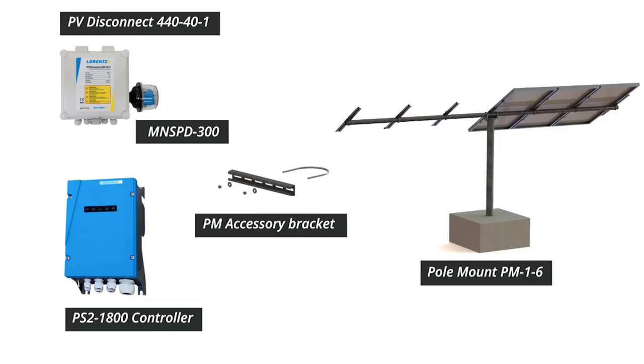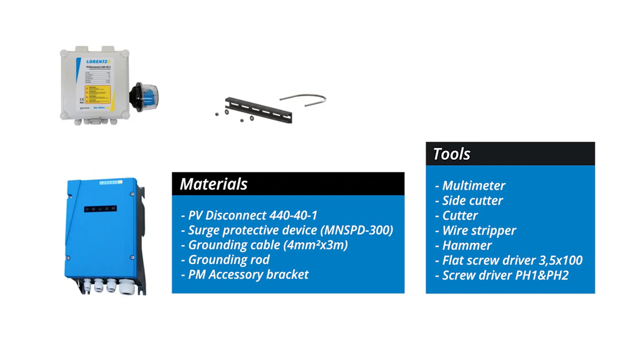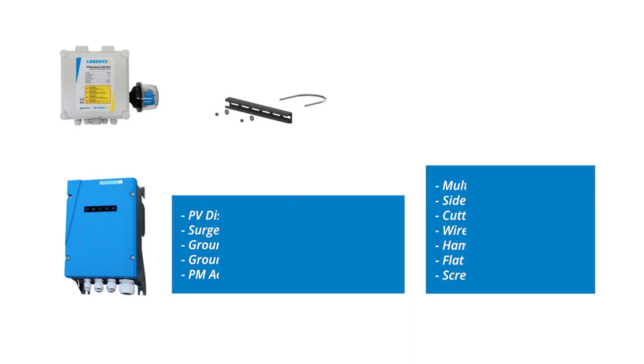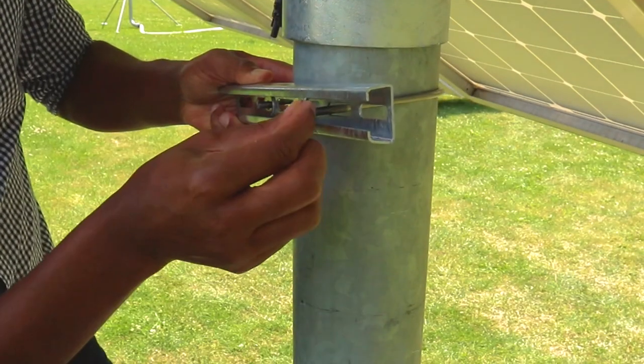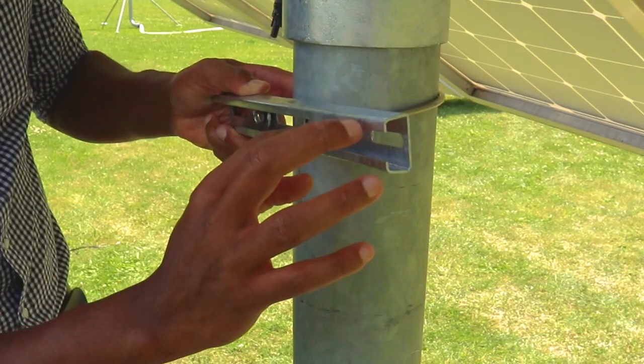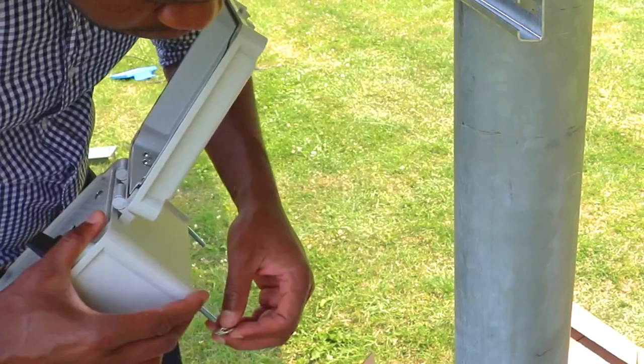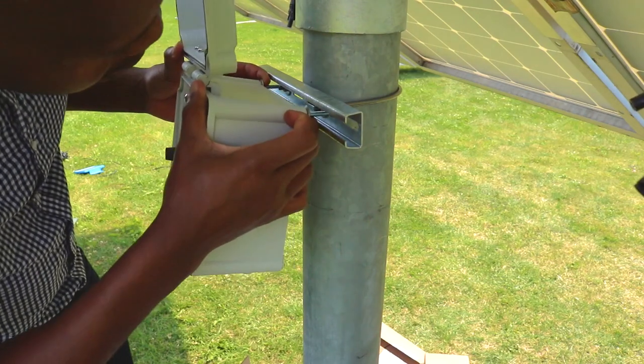The PV disconnect and the PS2 controller can be mounted on the pole mount, slightly below the rack head.